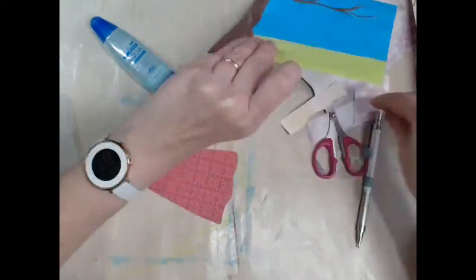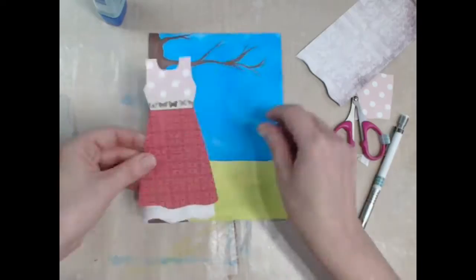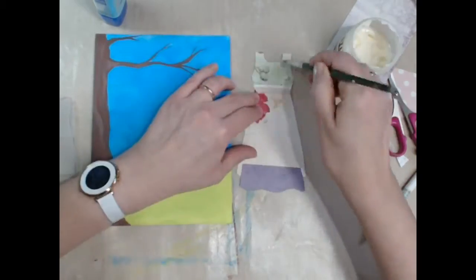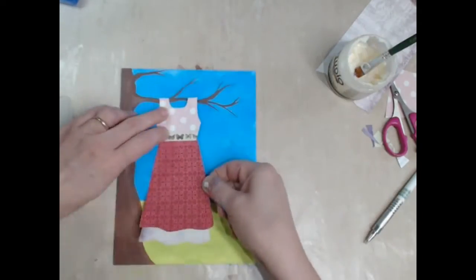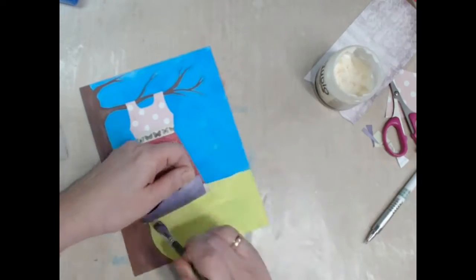I assemble the dress tacking it together with a few dots of glue before applying an even coat of gel medium to the back of it before positioning it on my page.